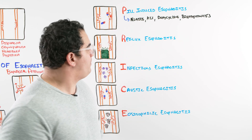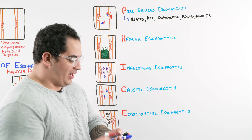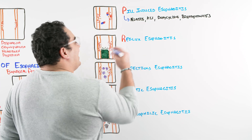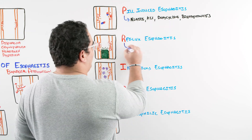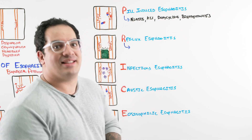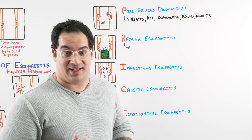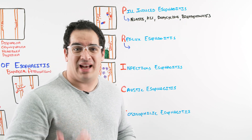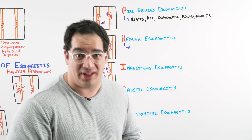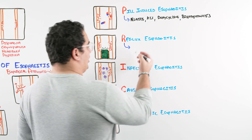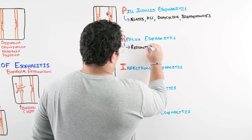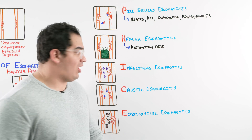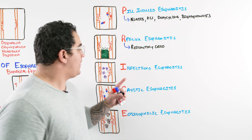Reflux esophagitis is due to gastroesophageal reflux disease. This is usually the patient with GERD who isn't responding appropriately to PPIs — so it's usually refractory GERD. The hydrochloric acid is tearing up the esophagus, as discussed in the GERD lecture.